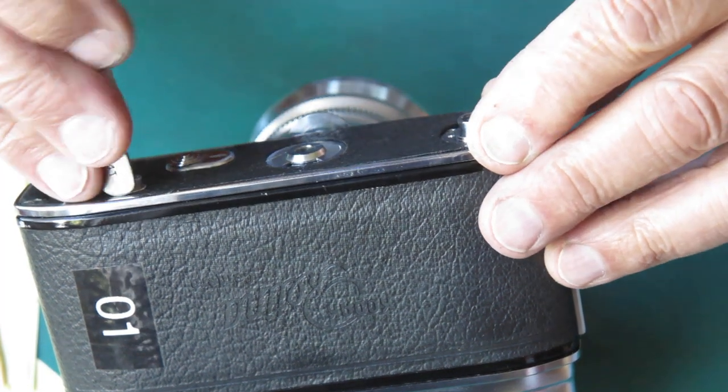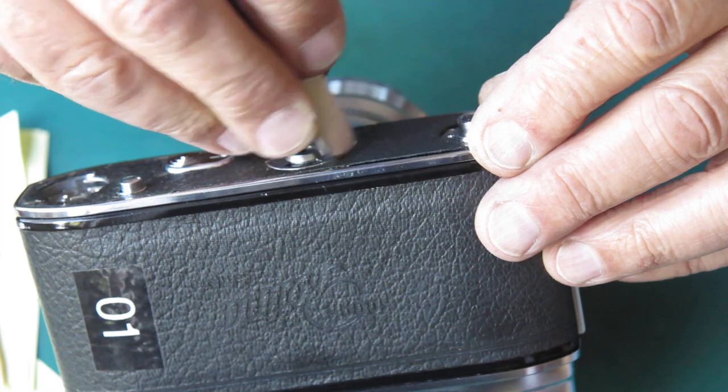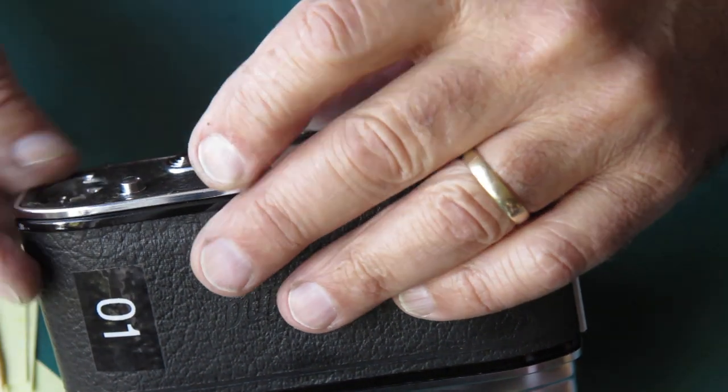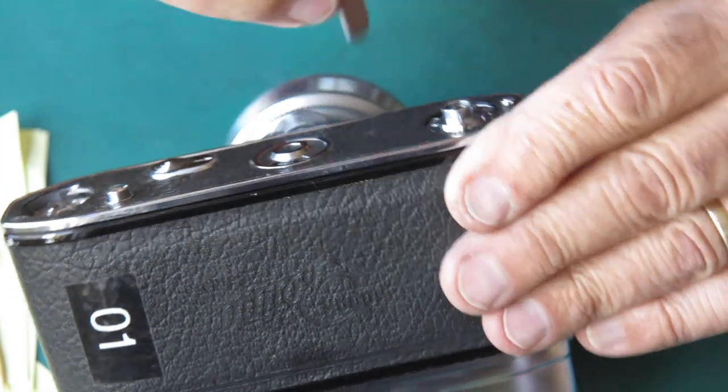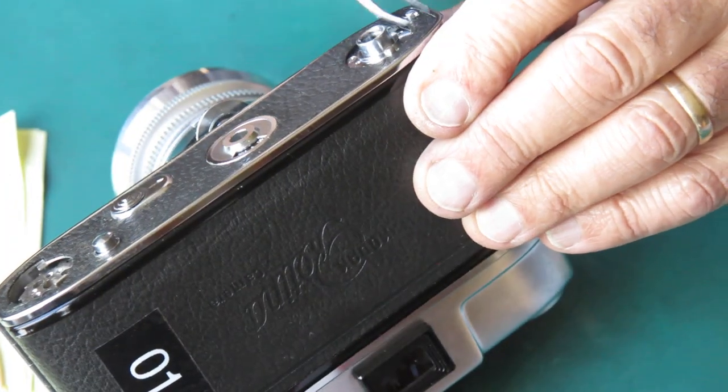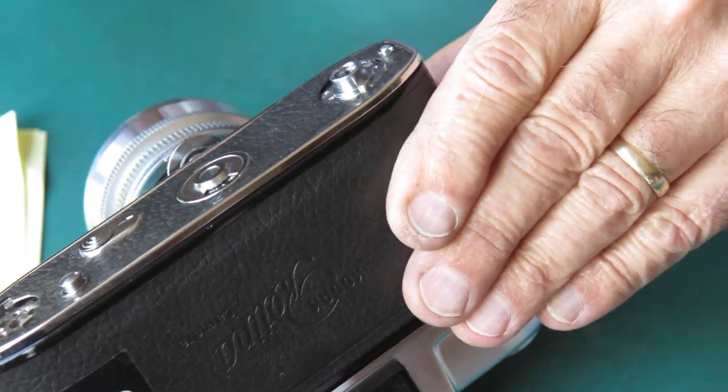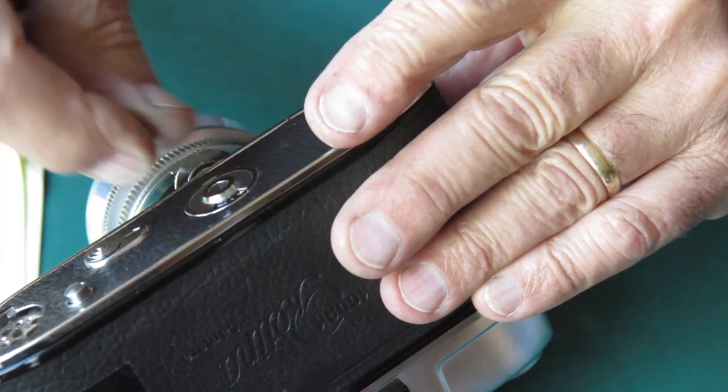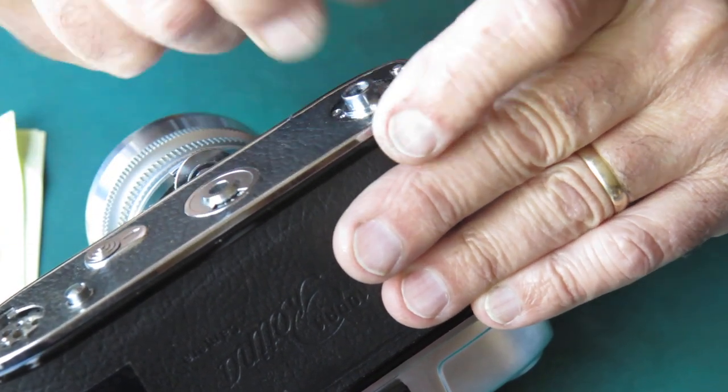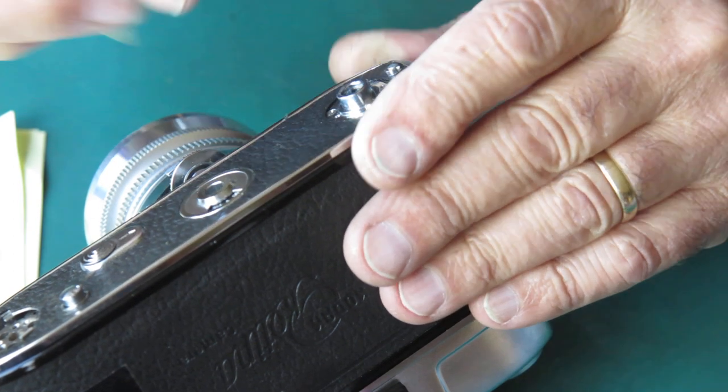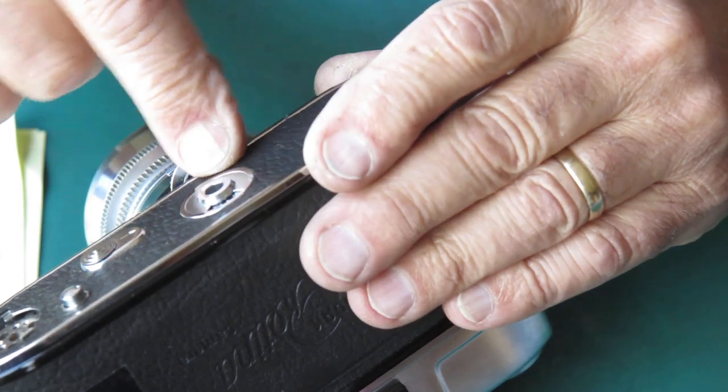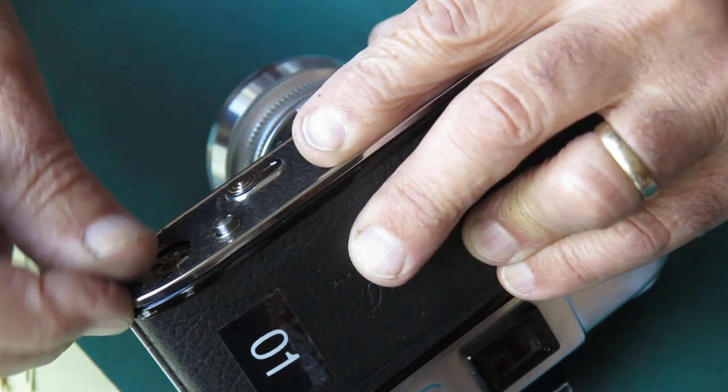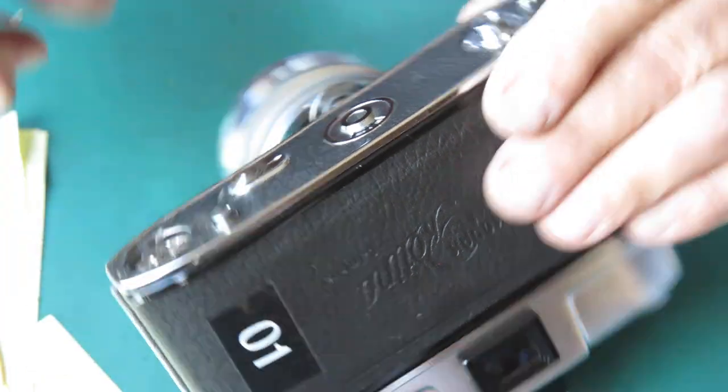To get the leatherette around the raised boss, around that rewind button, around the frame counter button, and around here, around that little shield that goes around the back catch release. The leatherette there is very thin. I mean, that's less than a millimeter of leather at either side there. So that's very fragile.